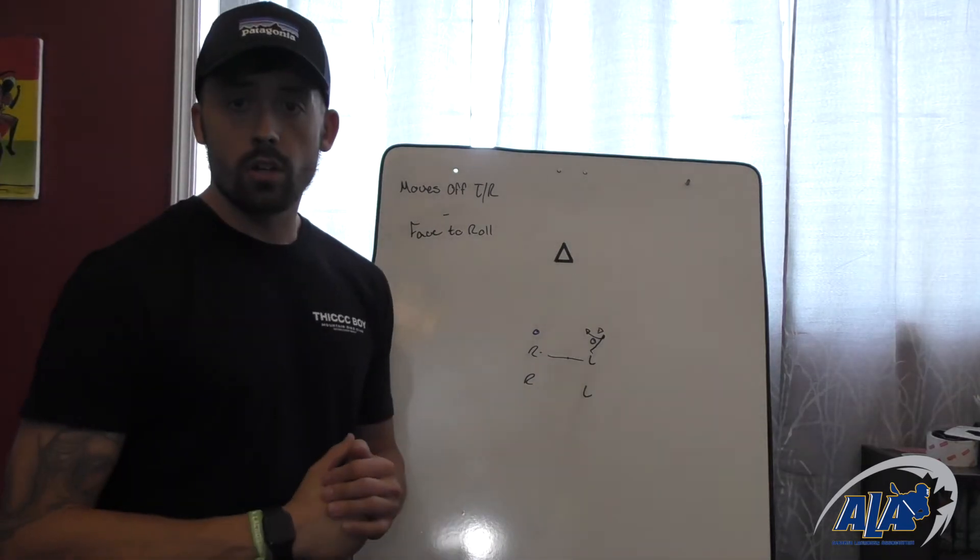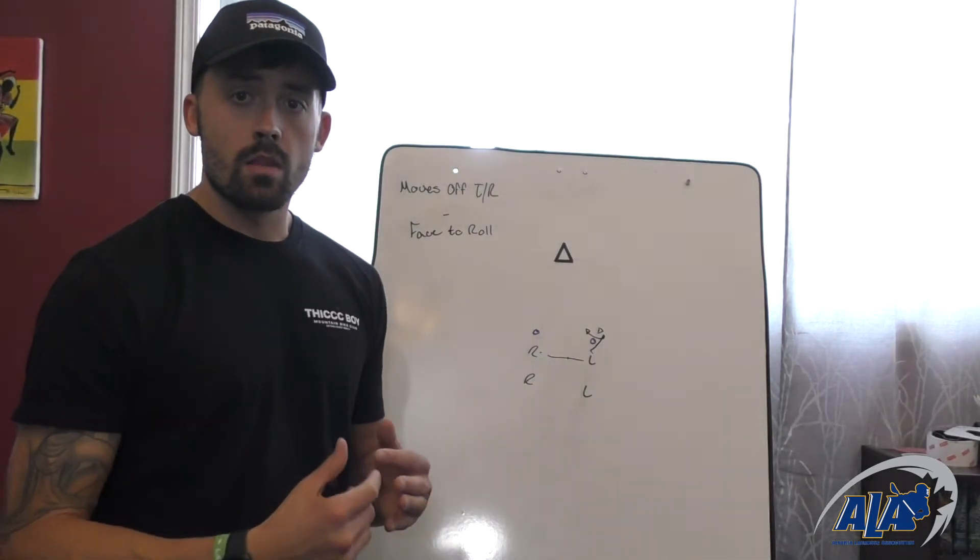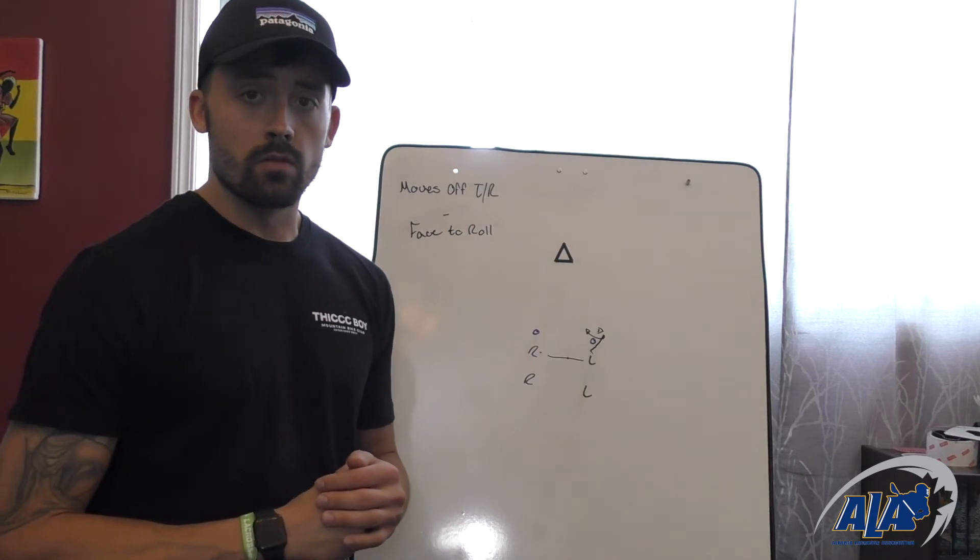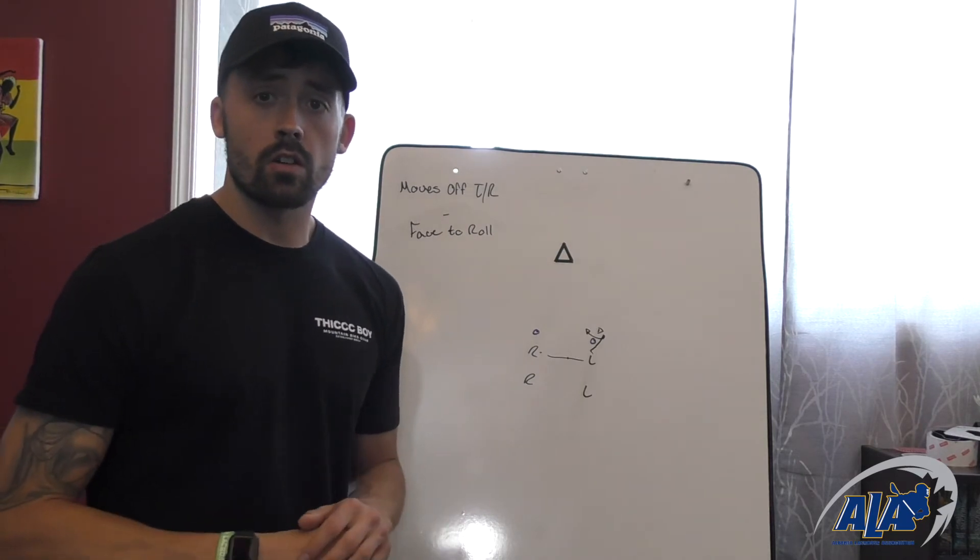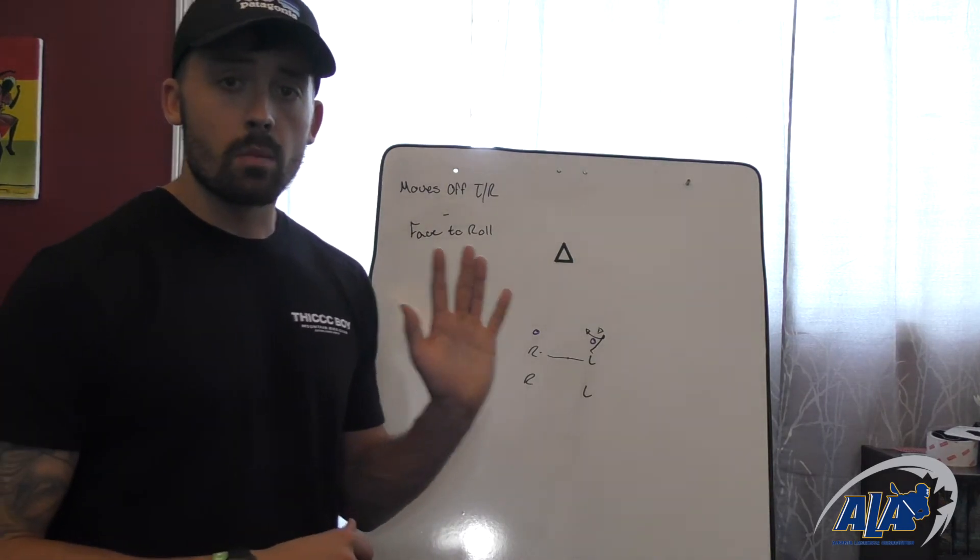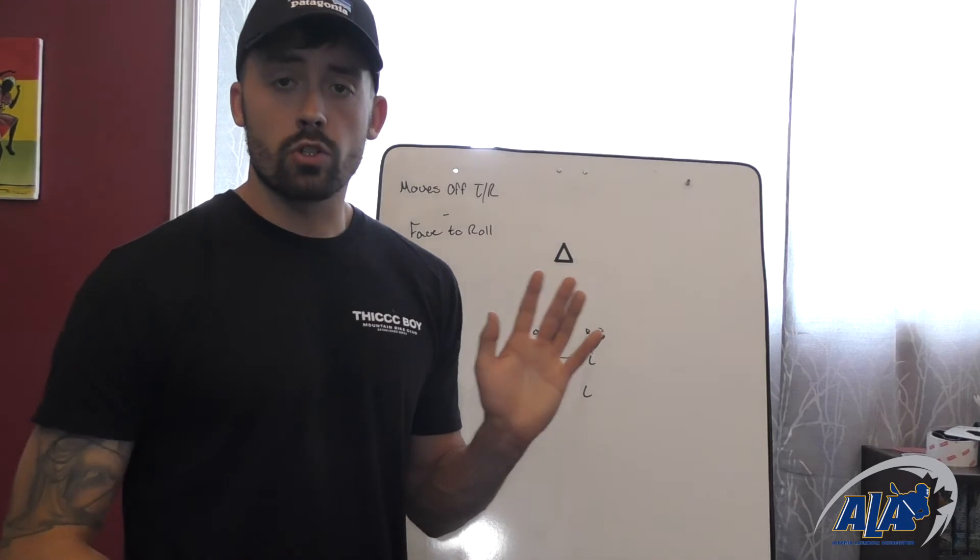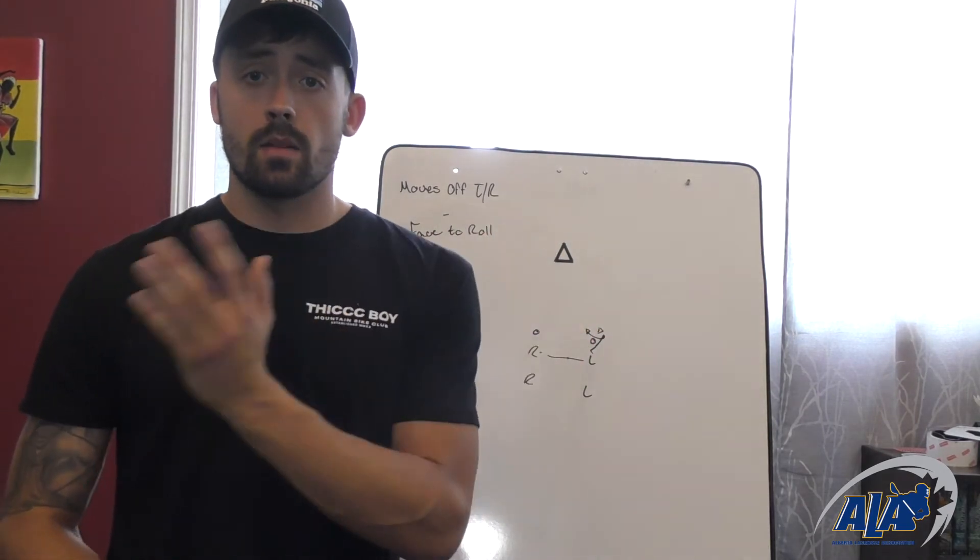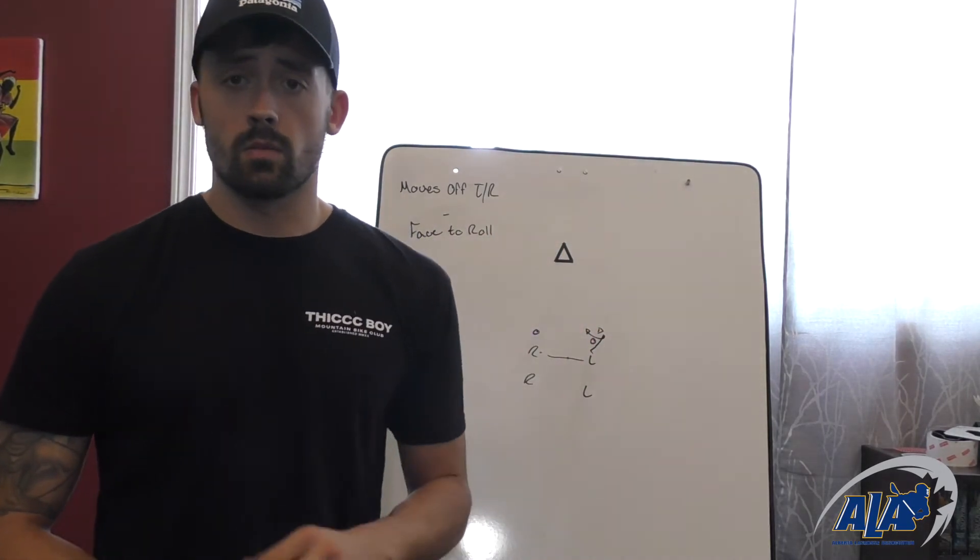With this combo dodge, we're still working on our two steps, but from different spots on the floor. When we initiate the face dodge, if I'm a left-handed player, I'm going to step with that left foot. My second step is with my right foot, trying to get down towards the net as I bring the stick across my face and protect it with my body.